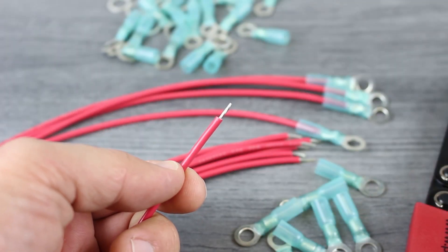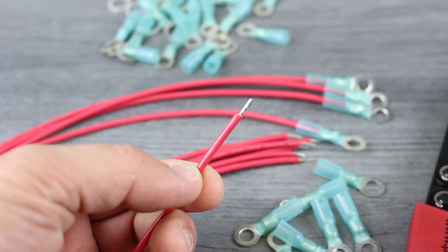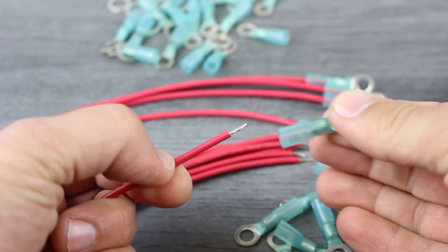Once your wires are properly stripped and prepared, simply slide the wire into the terminal body, making sure that the insulation butts up to the barrel of the ring terminal.